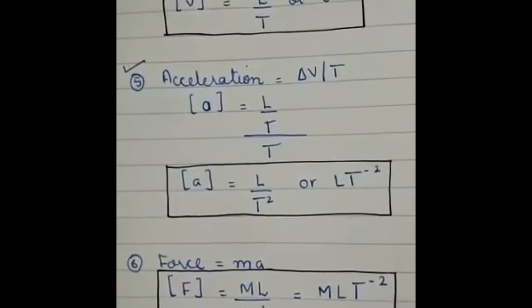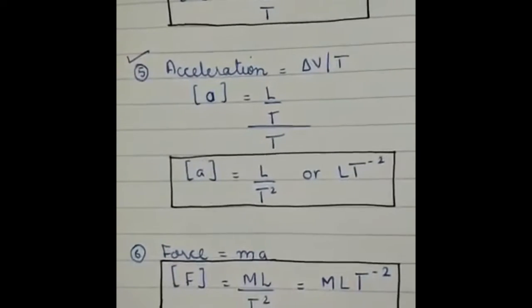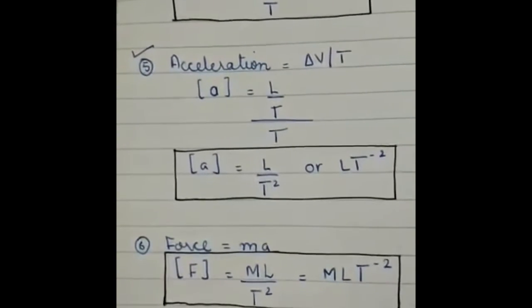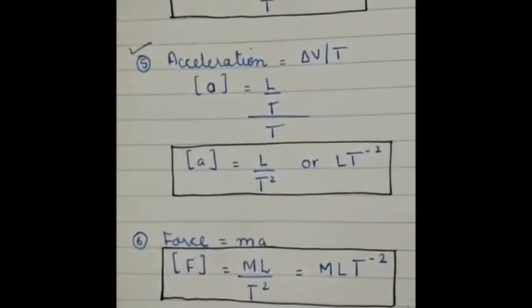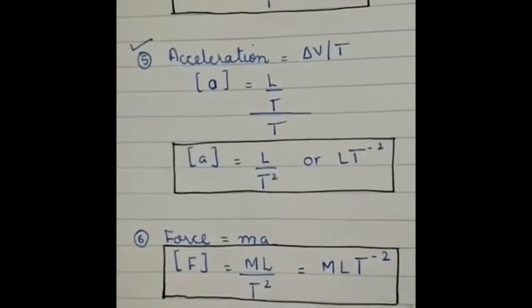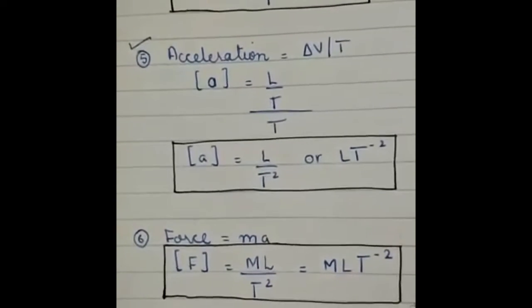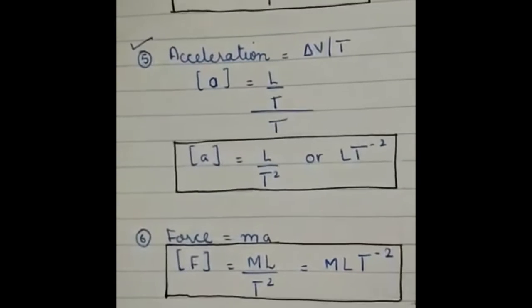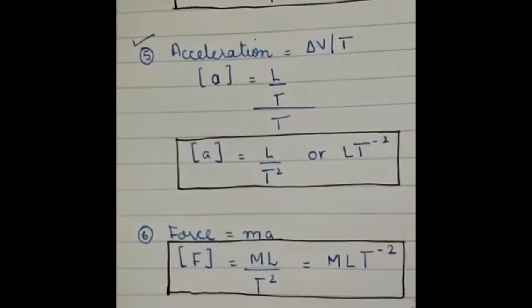Velocity which is distance per unit time, its dimension is L by T. Acceleration which is velocity per unit time, that is L by T square.